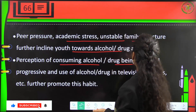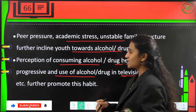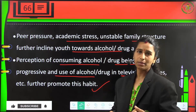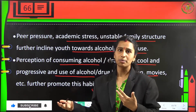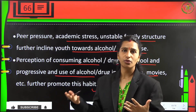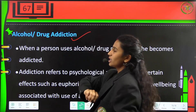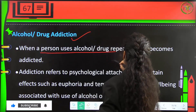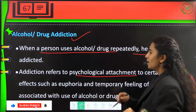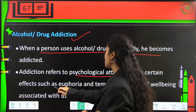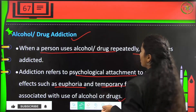The perception of consuming alcohol or drugs as cool and progressive, and the portrayal of alcohol and drug use in television and movies, further promotes this habit. When a person uses alcohol or drugs repeatedly, they become addicted. Addiction is a psychological attachment — producing euphoria and a temporary feeling of well-being — associated with the use of alcohol or drugs.